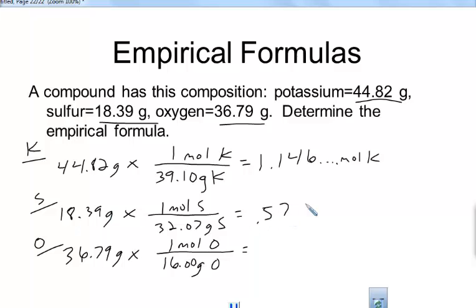44.82 divided by 39.10 is 1.14629 moles of potassium. I just put the dots, because I know there's a bunch of numbers there, but I'm just going to use sig figs for now. It is good to write all the numbers down in this case. So here I actually have four sig figs. So 0.5734.